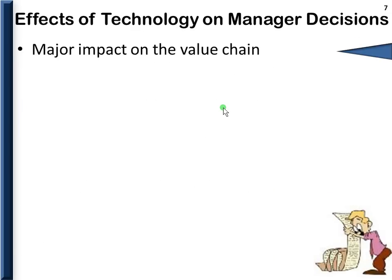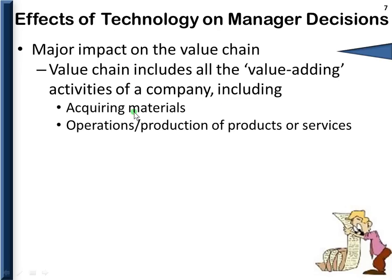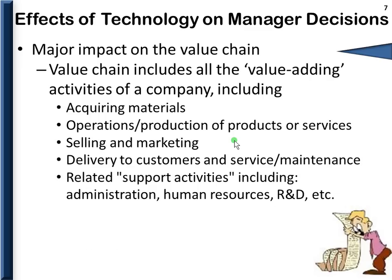Technology has a big impact on management decisions. The value chain includes all the activities of a company, starting with the acquisition of materials, the operations or production of products and services, selling and marketing these products to customers, getting them delivered, providing service, warranties, and maintenance, as well as all related support activities such as administration, human resources, research and development, payroll, and everything else a company must include to go from the beginning, generate a product, and reach the end.